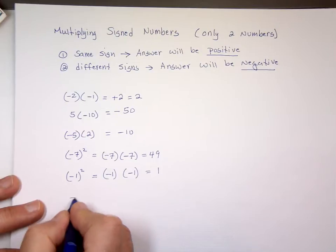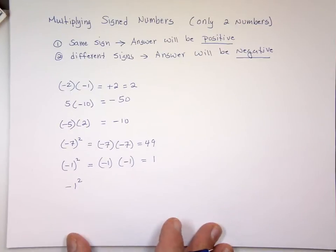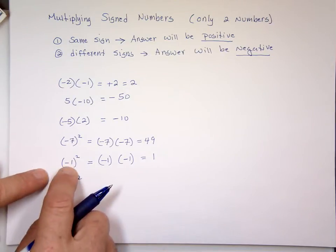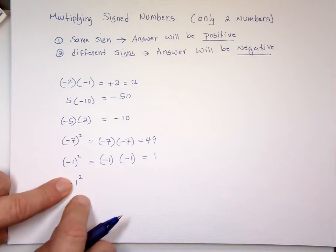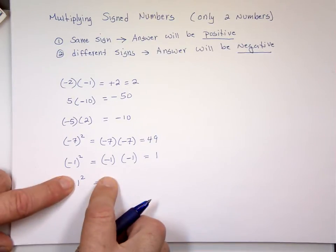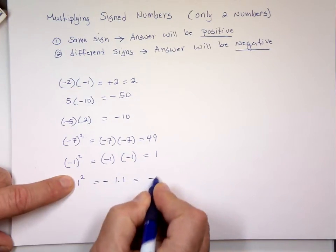What about negative one squared written without parentheses? Notice how I wrote that one — only the one is being squared, not the minus sign. So this form means the whole thing is negative one squared. But without parentheses, only the one is squared. So there's the minus sign out front, and one squared is one times one, giving you negative one.